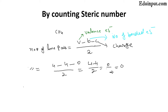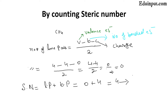Now, steric number equals lone pairs plus bond pairs. In case of methane, there are zero lone pairs and four bond pairs, because carbon is attached to four hydrogen atoms. So zero plus four equals four. Recall that sp3 hybridization involves one s orbital and three p orbitals — collectively four orbitals. So if the steric number equals four, the hybridization will be sp3.